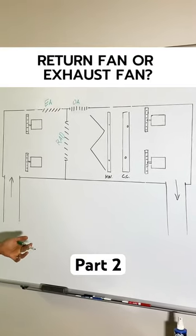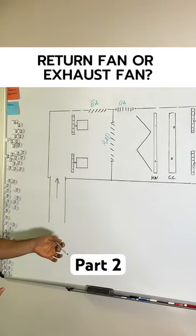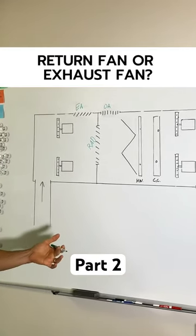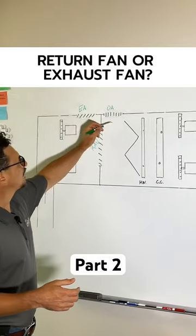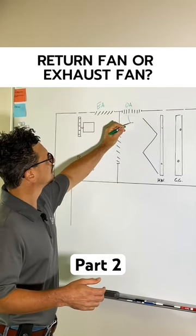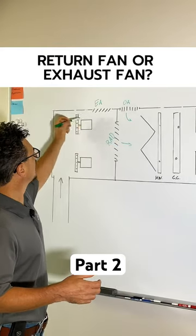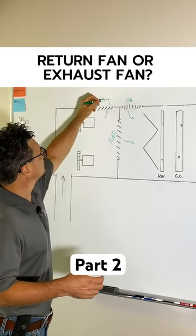A return air economizer, 100% economizer arrangement. In general operation, let's say you have 20% outside air. Your outside air is coming in here, mixing with your return air, and your exhaust air is going out here.